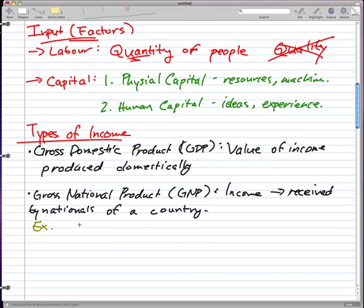For example, Canada makes a product in Mexico. So they make a product in Mexico. Now, this product is part of Mexico's GDP.